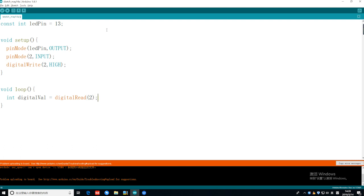The if statement checks whether the value of digitalVal read from pin 2 is high. That is, it checks whether the angle of the tilt switch changes or not.